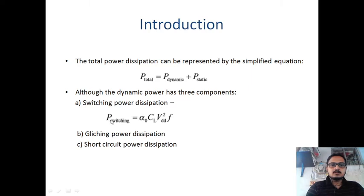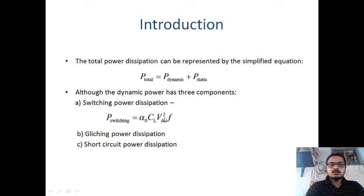The switching power dissipation formula: P_switch equals α₀ (switching activity) times CL (load capacitance) times VDD (supply voltage) times f (clock frequency). This is the most important power dissipation in dynamic power — it is almost 80 to 90 percent of the total dynamic power dissipation.